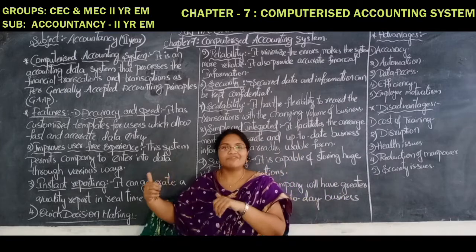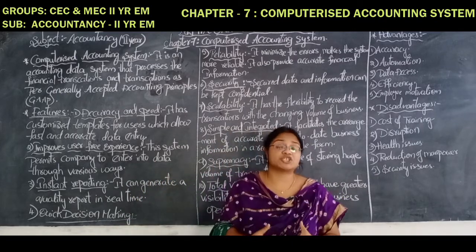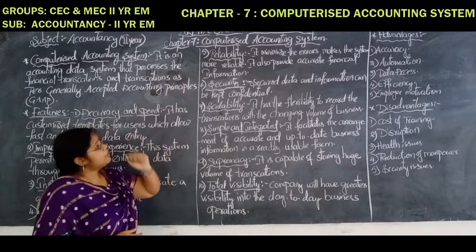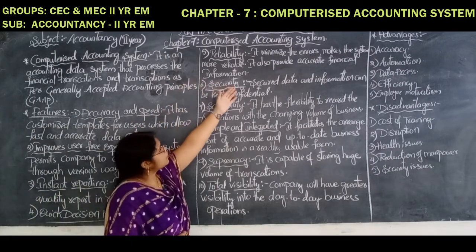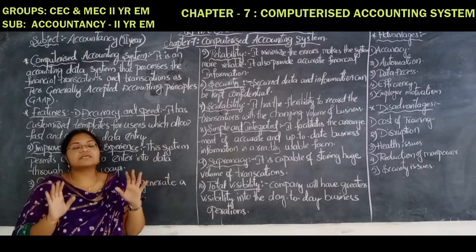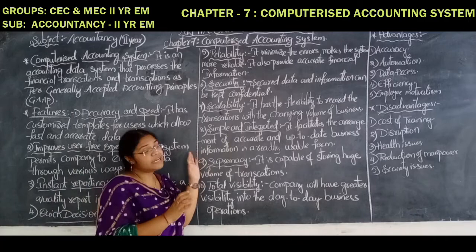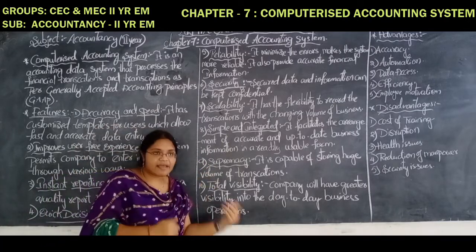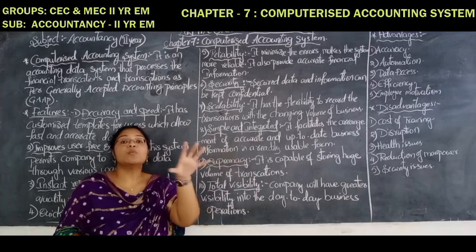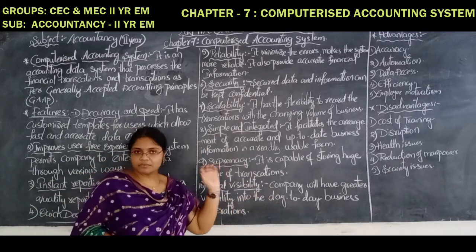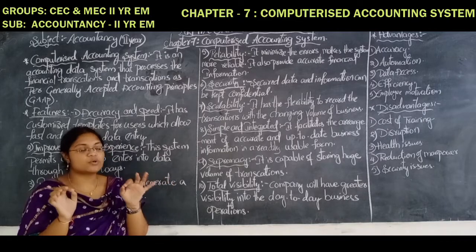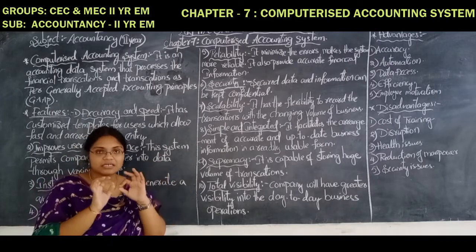Whereas in manual accounting, it will take more and more time to complete all the transactions and all types of financial reports. Reliability: it minimizes errors and makes the system more reliable. It also provides accurate financial information — whatever the necessary information is required, the total information is provided by the computerized accounting system, and it will reduce errors. If you are entering something which is not installed in the software, in such a case it will give warnings. It will show that you are entering a wrong transaction — there is an error — so we can know what is going on and whether the accounts we are entering are correct or not.